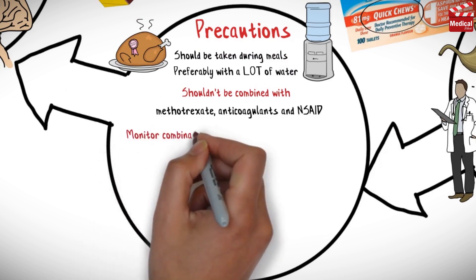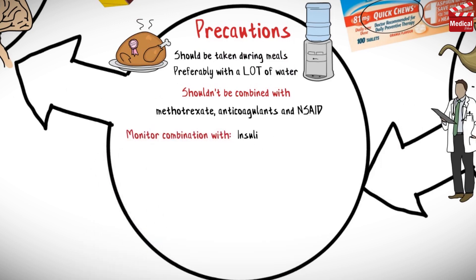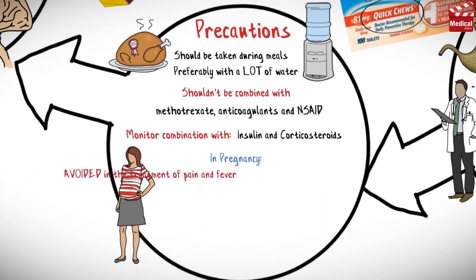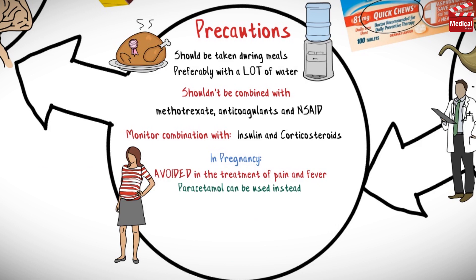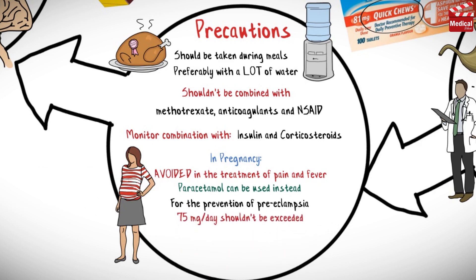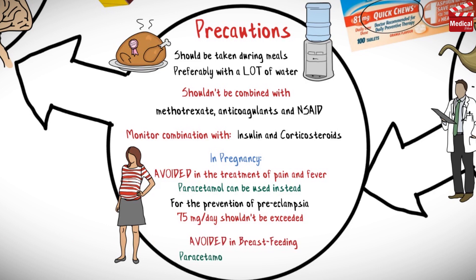Monitor combination with insulin and corticosteroids. In pregnancy, aspirin is avoided in the treatment of pain and fever, and paracetamol can be used instead. For the prevention of preeclampsia, the dose of 75 mg per day shouldn't be exceeded. Aspirin is also avoided in breastfeeding, and paracetamol can be used instead.